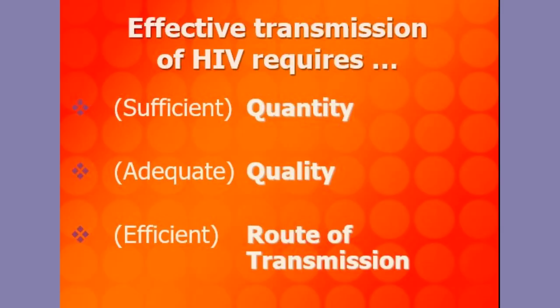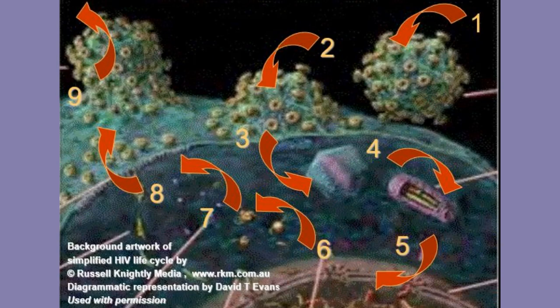HIV is not as easy to acquire as some other infections such as hepatitis B. It's really important to emphasize here quantity, quality and route of transmission. If any of these three are broken then it's not possible for HIV to pass from one person to another. This image shows the life cycle of HIV once it enters a person's bloodstream. The anti-HIV medications abort the life cycle of HIV at each of these various stages.